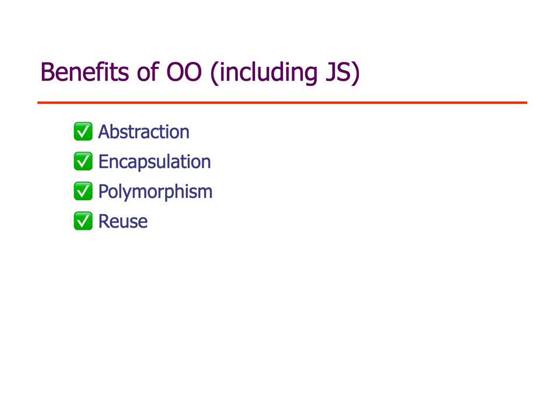When we talk about object-oriented programming, it was created initially to bring these benefits — and it does bring them: abstraction, encapsulation, the separation of the implementation of an object from its interface, polymorphism, the ability to substitute multiple implementations for the same interface, and reuse, the ability to write abstractions so they're reusable so we can stop duplicating so much code.